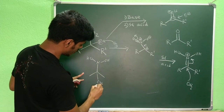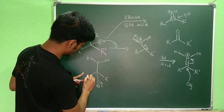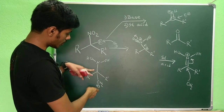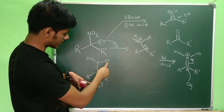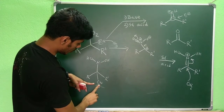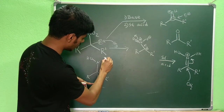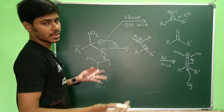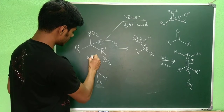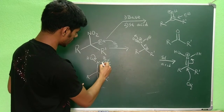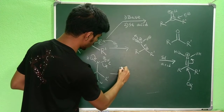After water attack you get an intermediate bearing an OH2+ and an OH group. A proton exchange can occur between the OH2+ and the OH, making one of them OH and the other OH2+. Then in the next step this oxygen can push electrons and the OH2 can leave as water.